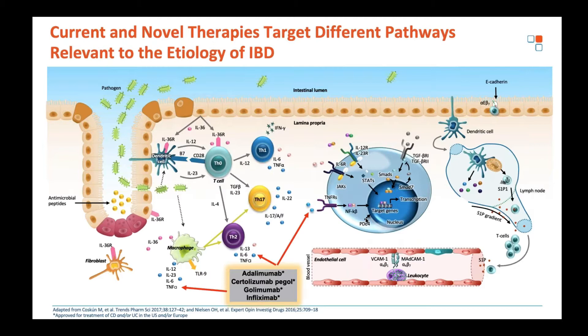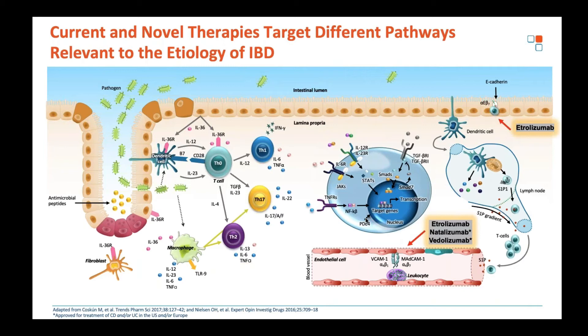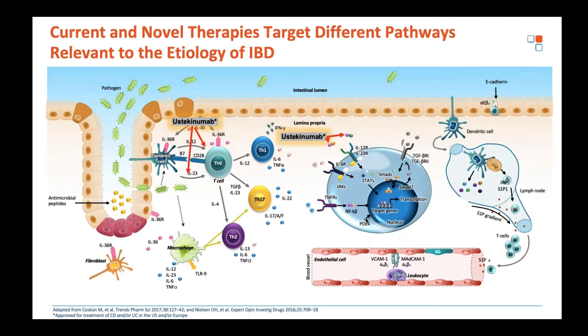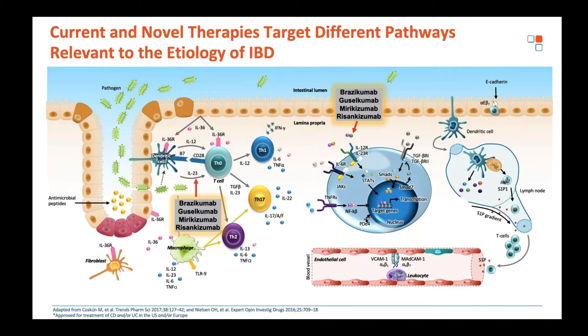The anti-TNFs neutralize soluble and membrane-bound TNF and cause apoptosis in TNF-expressing cells. Drugs such as etrolizumab, natalizumab, and vedolizumab — anti-integrins — block the trafficking of leukocytes back into the lamina propria. Ustekinumab, an anti-P40, blocks IL-12 and IL-23 signaling, reducing differentiation to TH1 and TH17 effector memory lymphocytes. The more specific anti-P19s are focused on IL-23 and the differentiation and function of TH17 cells.